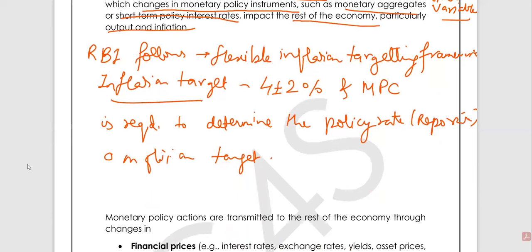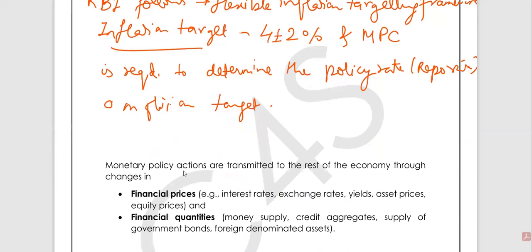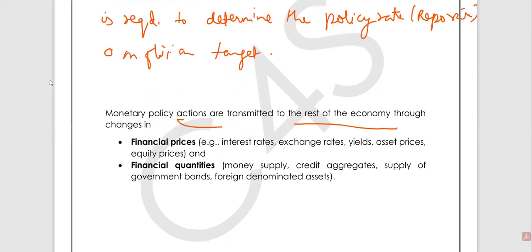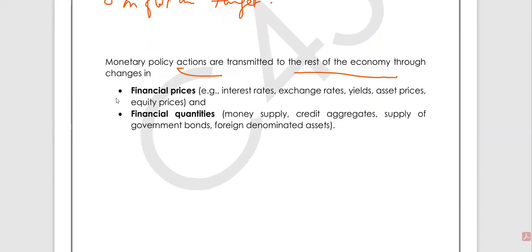Let's see how monetary policy actions are transmitted to the rest of the economy. There are two mediums. First is financial prices, and second is financial quantities. Financial prices include: interest rates, exchange rates, yields, asset prices, and equity prices.